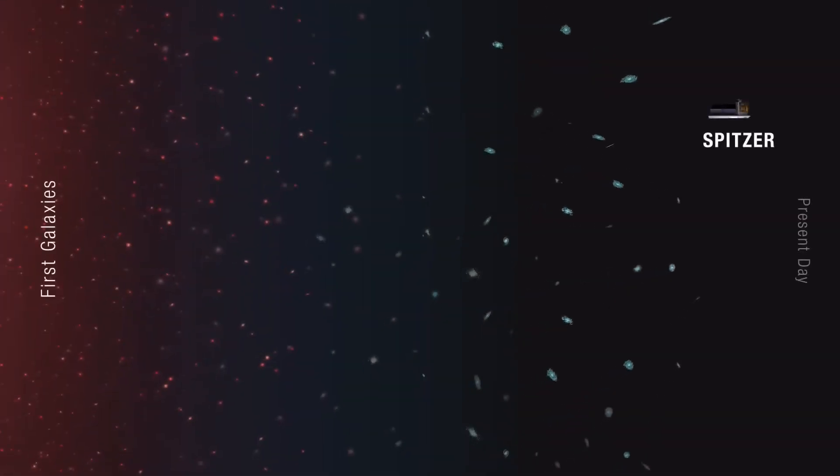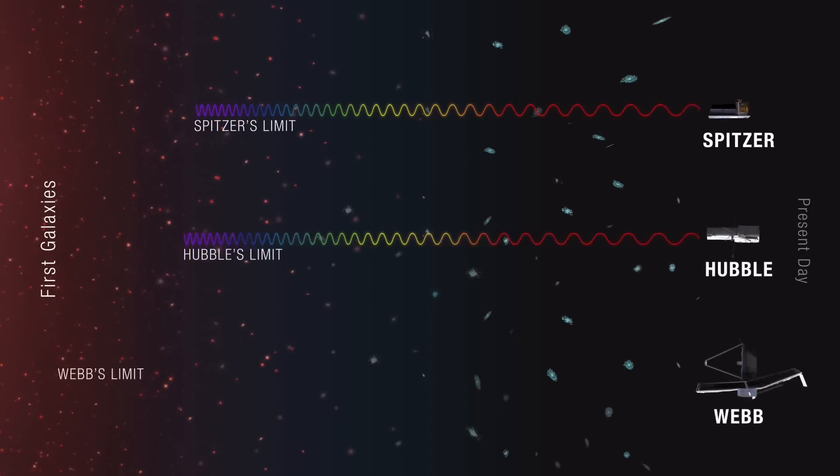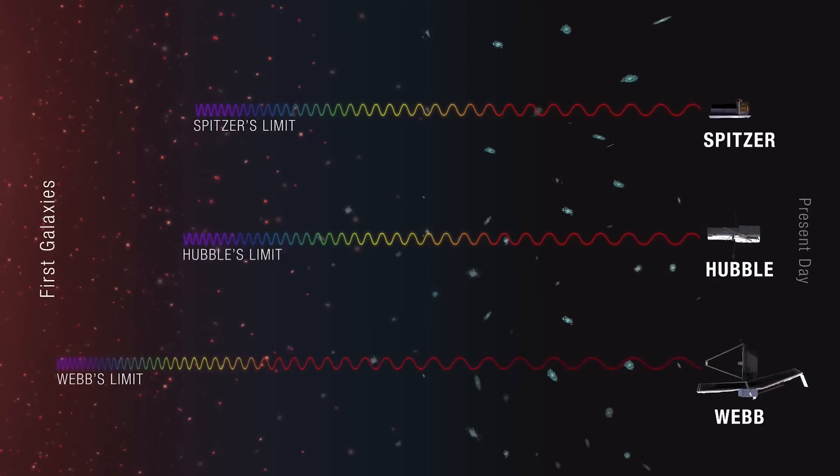Past telescopes have detected infrared light, but the faint light of the very first galaxies has remained out of reach, until now.